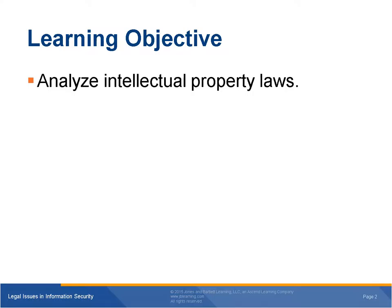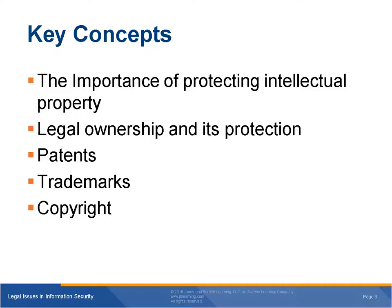The learning objective for this chapter is to analyze intellectual property laws. The topics we will cover include why intellectual property law is important, what the concept of legal ownership is, what the basics of patent protection are, what the basics of trademark protection are, what the basics of copyright protection are, and what the basics of the Digital Millennium Copyright Act are. Key concepts include the importance of protecting intellectual property, legal ownership and its protection, patents, trademarks, and copyright.